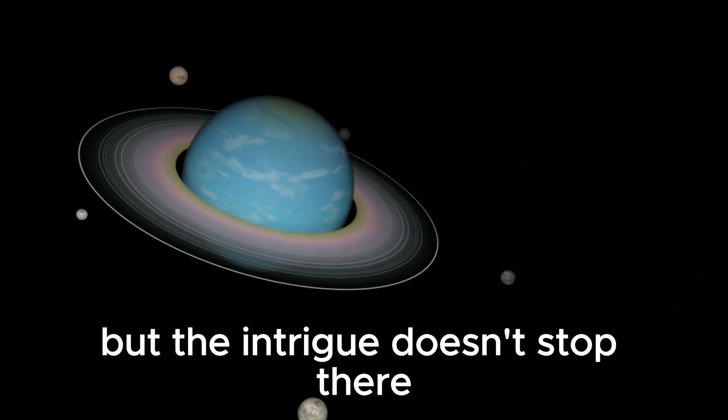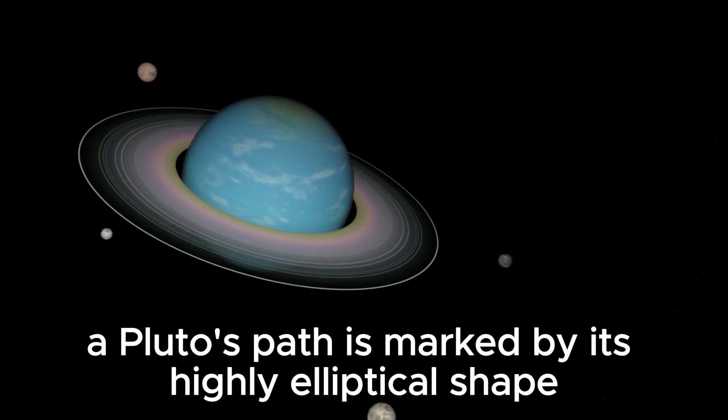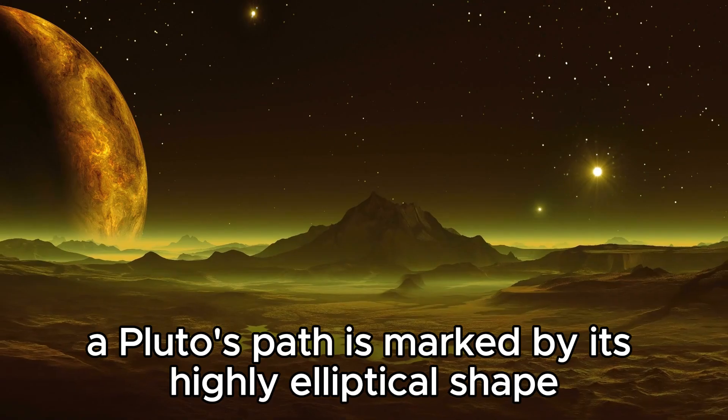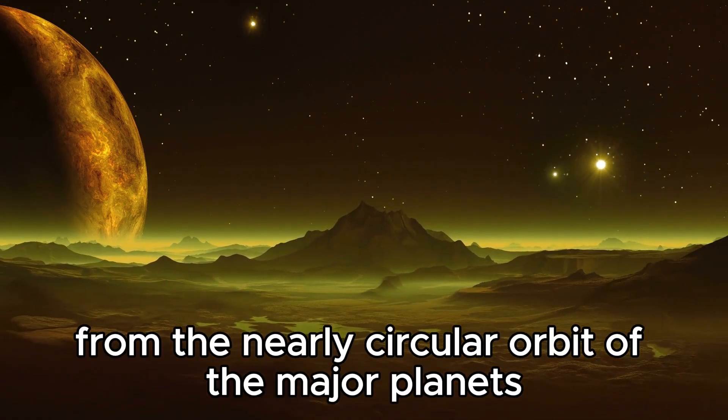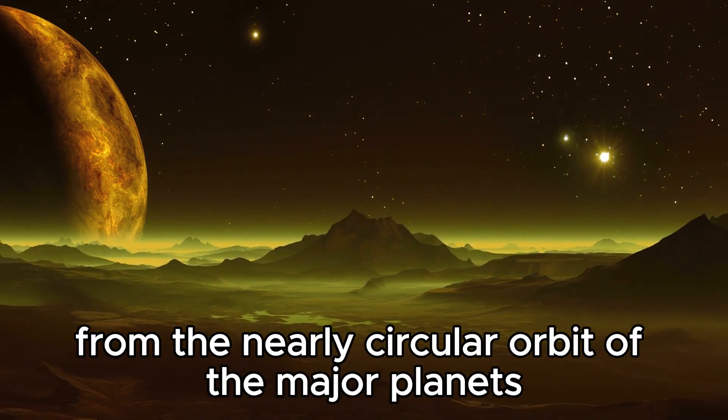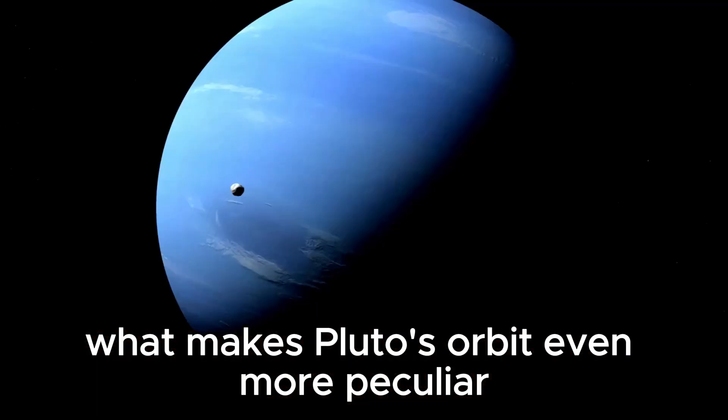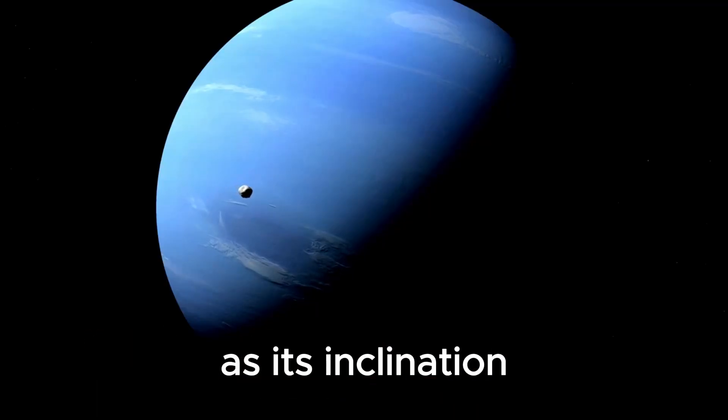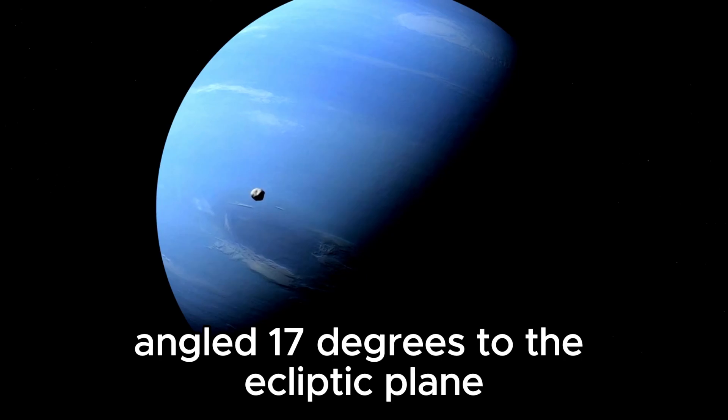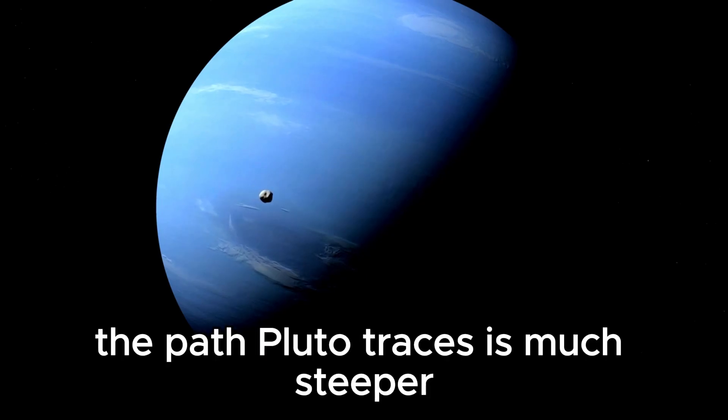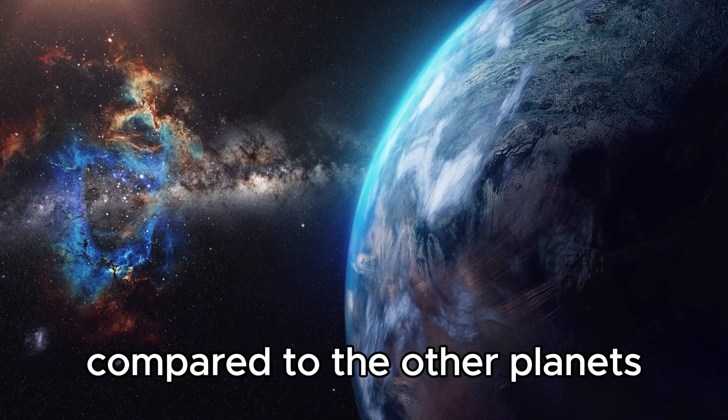But the intrigue doesn't stop there. Pluto's path is marked by its highly elliptical shape, deviating significantly from the nearly circular orbit of the major planets. What makes Pluto's orbit even more peculiar is its inclination, angled 17 degrees to the ecliptic plane. The path Pluto traces is much steeper compared to the other planets.